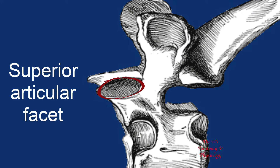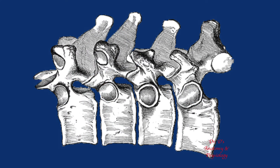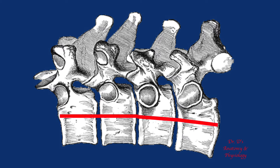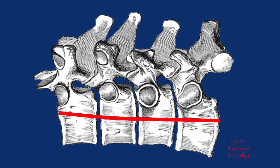To get a better understanding of how these articulations work, let's look at four thoracic vertebrae articulated with one another. The bodies of the vertebrae are articulated by means of intervertebral discs, located between the bodies, which permit some degree of movement — not free movement, but some. In the thoracic region, what you're going to primarily see is flexion, extension, and hyperextension.